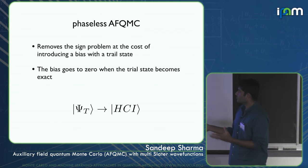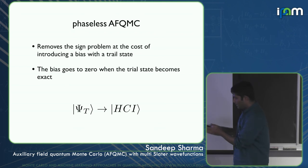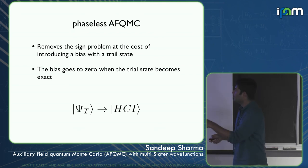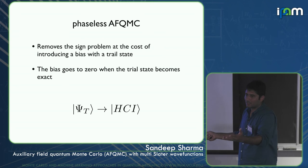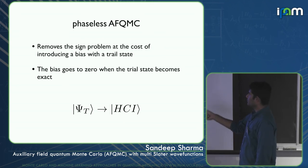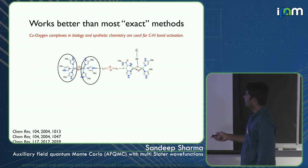This entire trick can also be used for phaseless AFQMC: instead of using Hartree-Fock as the trial state, you use HCI to reduce the bias introduced by the phaseless approximation.